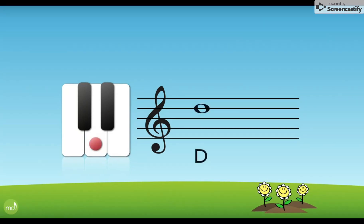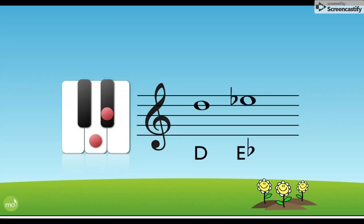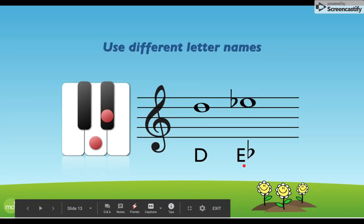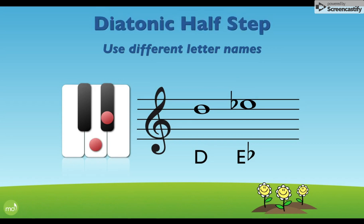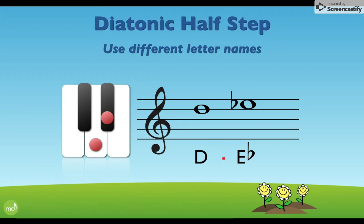In this next example we have a different kind of half step. We're going to use the same note again, D, and go to the next black key just like we did before, but this time we're going to change the letter name to E flat. Notice on the keyboard we're using the same notes — there's still a half step because they're directly touching — but because we've changed the letter name, it's called a diatonic half step. D for different, D for diatonic. They look the same on the keyboard but are named differently on the staff.